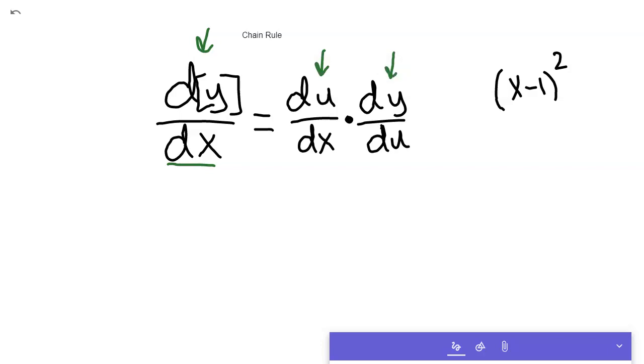And if this was your function, let's call it f instead of y, if you wanted the derivative of f, the function f with respect to x, what you'd have to do is split that up. And you'd have to set this middle part, you've got a function within a function, x minus 1.